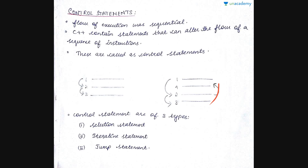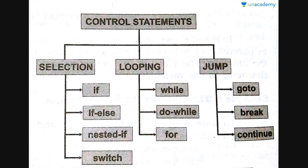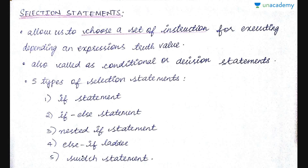Control statements are of three types: selection, iteration, and jump statements. Under selection you have if, if-else, nested if, switch. Under looping you have while, do-while, and for. Under jump you have goto, break, and continue. Let us do them one by one, starting with selection statements.